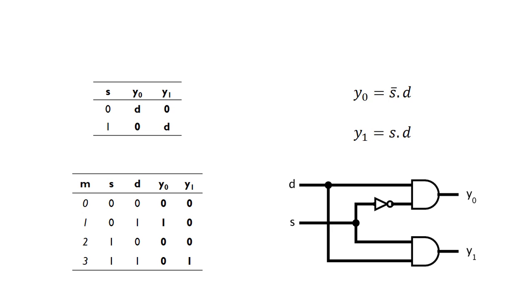This is actually easier to build. The first thing to note is that we've got two inputs now: our data input d and our select bit s. We've got two outputs, so in the truth table, we have two output columns—y0 is one output and y1 is a separate output.